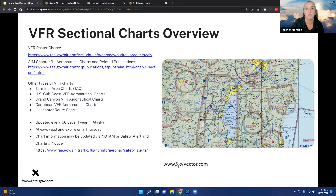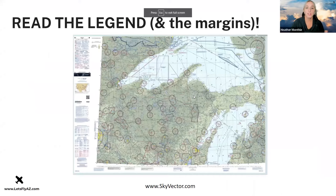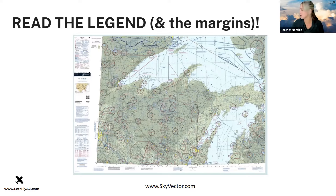Sky Vector is a fantastic website that gives you all the charts and seams them all together so it looks like one big map. You can also look at individual charts, including the margins and legends. My key statement here: read the darn chart. Make sure you are reading the chart you're looking at — there's all sorts of information right on it. If you get a question on a written exam or check ride and can't answer it, read the legend, read the margins, read the darn chart.